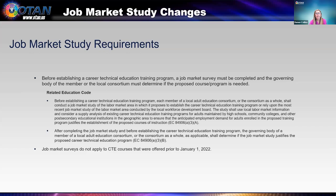Before establishing a career technical education training program, education code 84906 requires that a job market survey must be completed and the governing body of the member or the local consortium must determine if the proposed course or program is needed. Agencies should be looking at labor market information and work with their workforce development boards to establish demand for the proposed CTE program. Consortia should also consider training programs that may already be available in the local area to avoid any duplication of services. Job market surveys do not apply to CTE courses that were offered prior to January 1st, 2022 — this is a relatively new change to the education code.